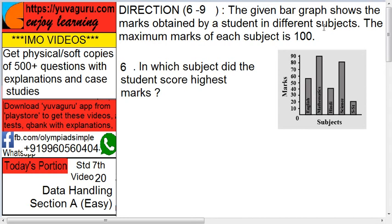The given bar graph shows the marks obtained by a student in different subjects out of 100. We have to answer the questions from 6 to 9. Let's start.